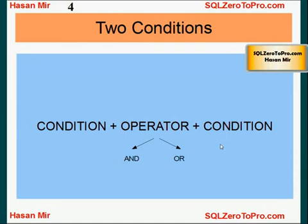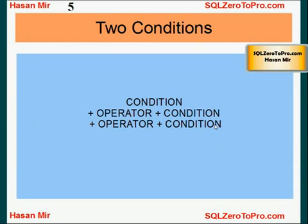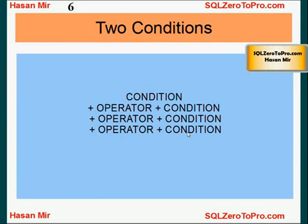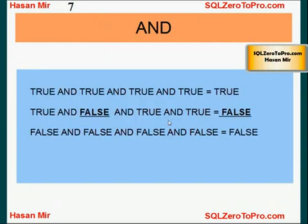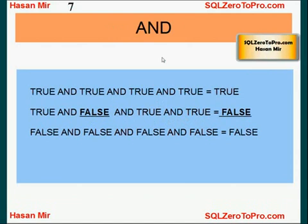Each condition will result in either true or false, and the logical operator is applied to the result of both conditions and a new result is generated. For example, true AND true is true, true AND false is false, and so on. In this tutorial I'm going to introduce a little more complexity. You can put more than two conditions in a WHERE clause — for example, three conditions separated by two logical operators, or four conditions separated by three logical operators.